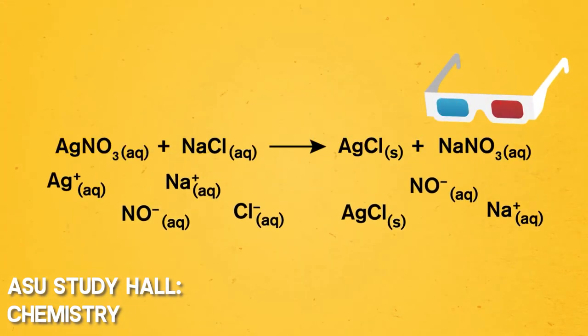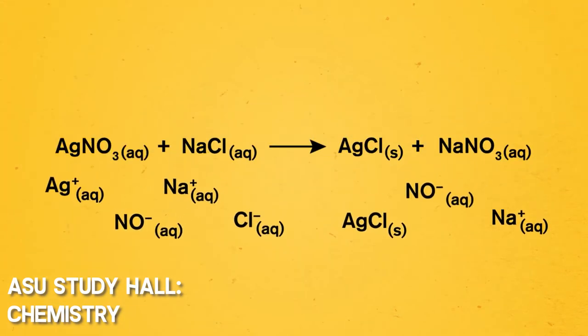Let's try our ion vision next to figure out what's happening to the ions. This shows that silver nitrate and sodium chloride have the free ions of silver, nitrate, sodium, and chloride. As for the products, we just have ions from sodium nitrate, since the precipitate silver chloride is an insoluble solid.